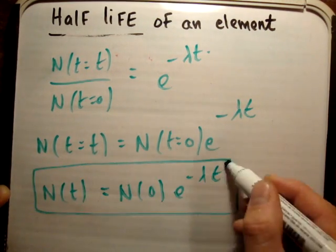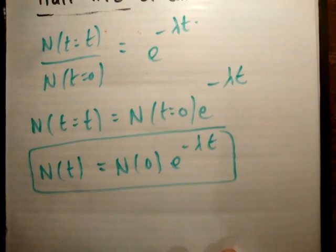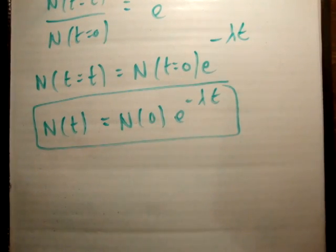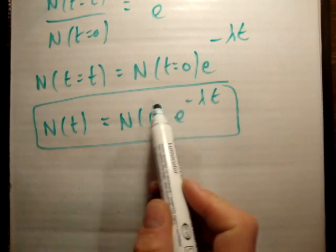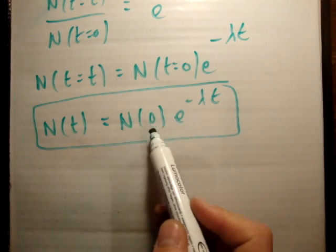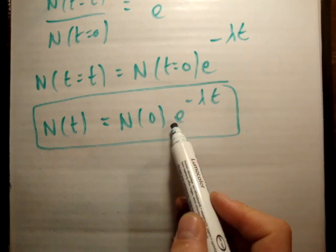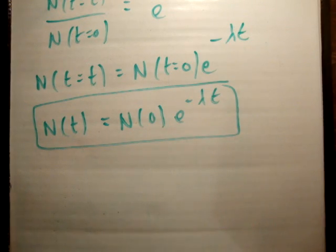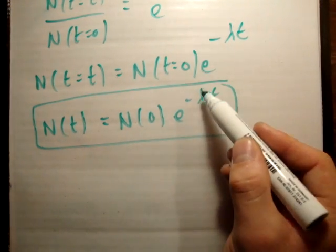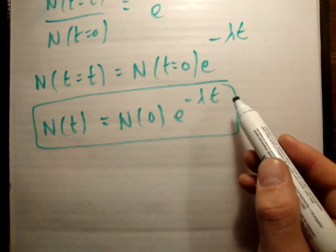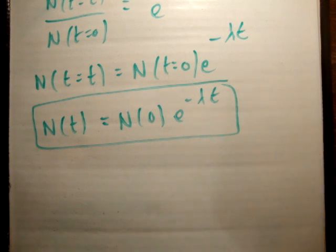That's the equation for radioactive decay. It means the number of atoms at a certain time equals the number at the beginning times a decaying exponential, which depends on the constant of proportionality lambda and the time elapsed. Now the last thing I'm going to show you is how to get the half-life.